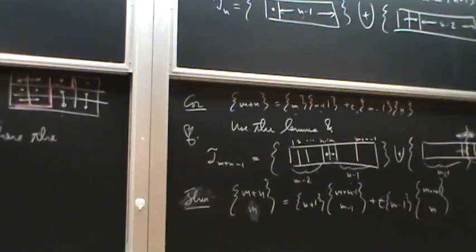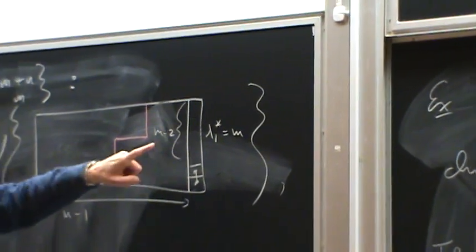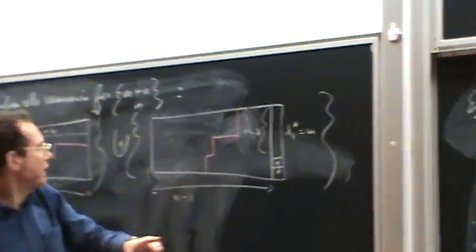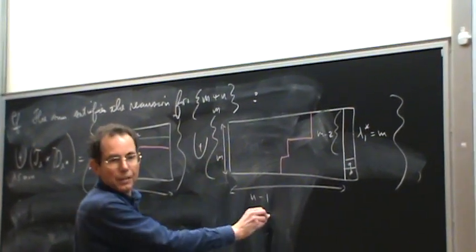This domino is weighted by a t. That's the t there. How many ways are there to fill the remaining m minus 2? When you shift m minus 1, and then you're filling, now I'm m by n minus 1.